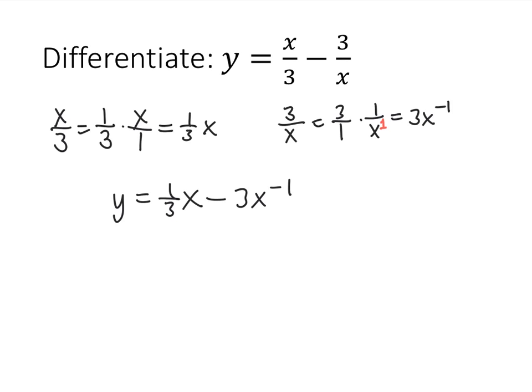Again, remembering that x can be written as x to the first power. Our y prime is going to be one-third. That's just going to stay there by the constant multiple rule. The 1 comes down, and I get x to the 0.